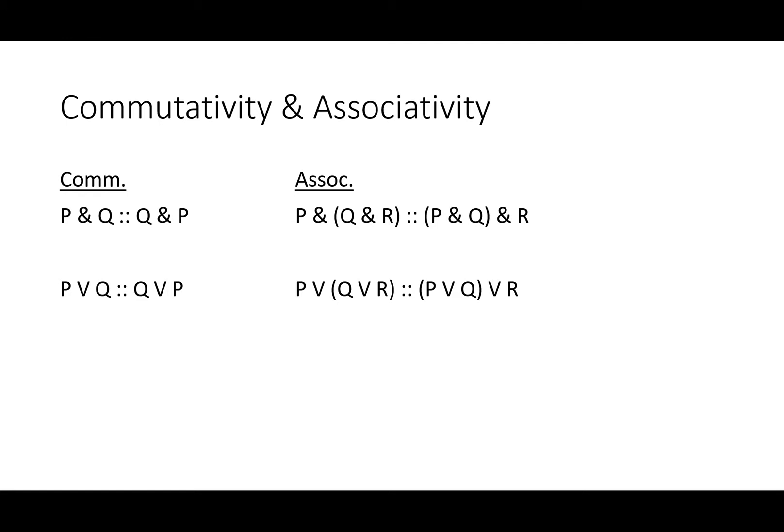Commutativity is a rule that tells us the order doesn't matter for AND or OR. P and Q is the same as Q and P. P or Q is the same as Q or P. That's a rule we operate with in our daily speech all the time.